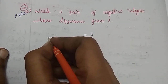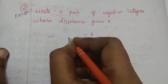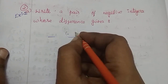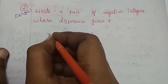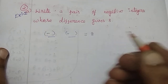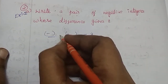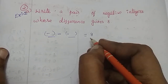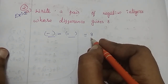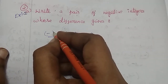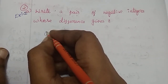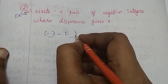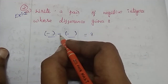We have two negative numbers. In any random pair of negative numbers, if the difference comes to 8, that is our answer. First, there is one negative number; second, there is also one negative number.